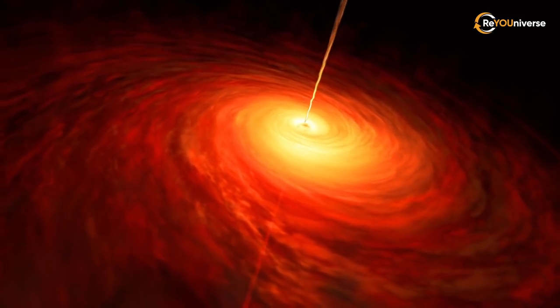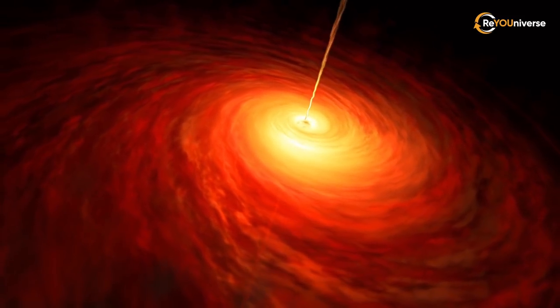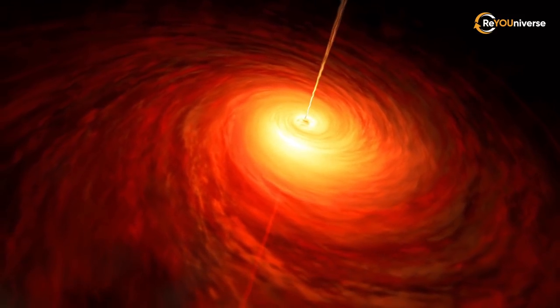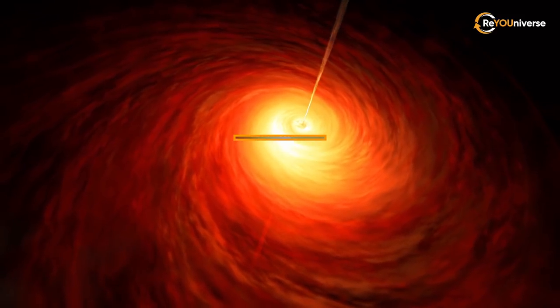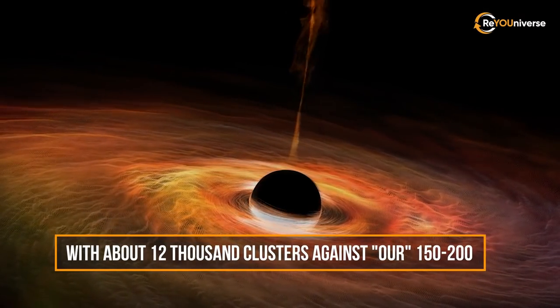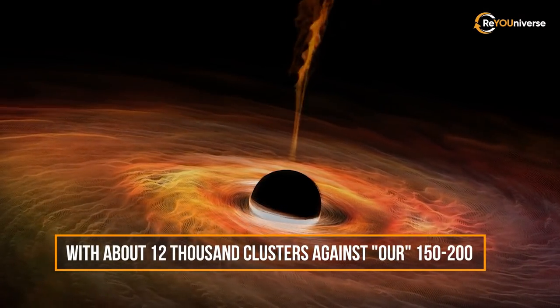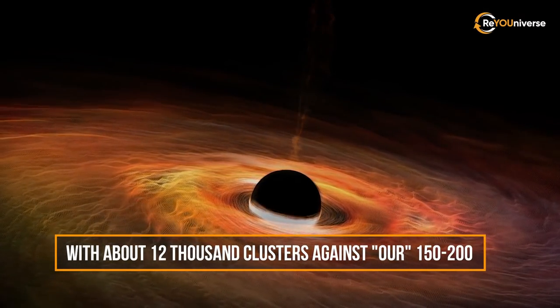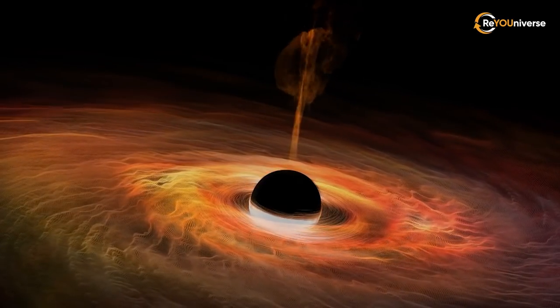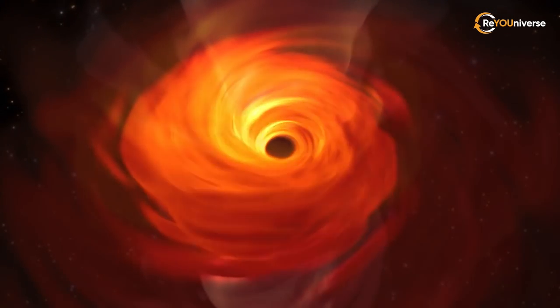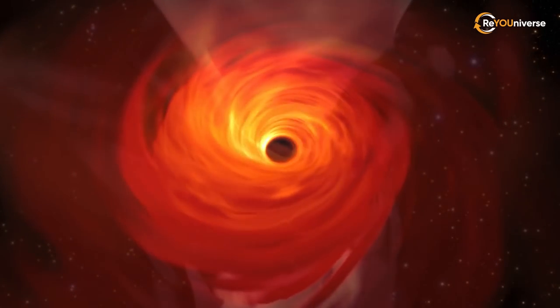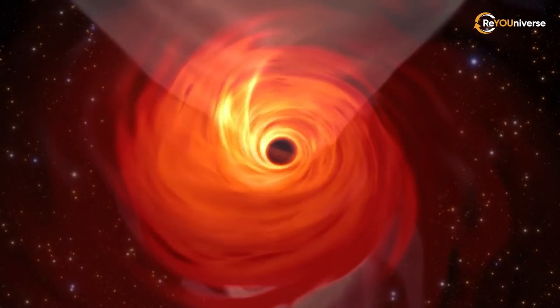According to various estimates, the total mass of M87 may exceed the Milky Way by 200 times, with about 12,000 clusters against our 150 to 200. It also surpasses our galaxy by almost two orders of magnitude in terms of the number of globular star clusters.